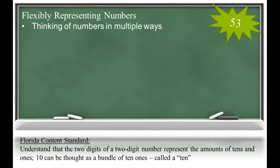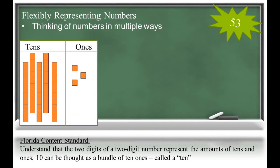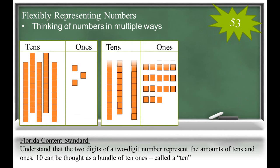A deep understanding of tens and ones allows students to think flexibly about numbers. Thinking flexibly simply means to represent a number in multiple ways. For instance, the number 53 can be represented with five tens and three ones, or it could be shown with three tens and 23 ones. This model shows the same number 53, but two tens have been shown as ones instead.